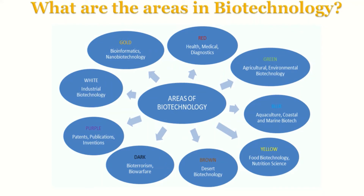So what are the areas in biotechnology? Biotechnology has really grown and is not the way it was several years ago. We have what we call red biotechnology, which involves health, medical, and diagnostic issues — producing products or technologies tackling our health and medical issues. Green biotechnology is agricultural and environmental biotechnology — any advancements in agriculture and environment fall under green biotechnology.